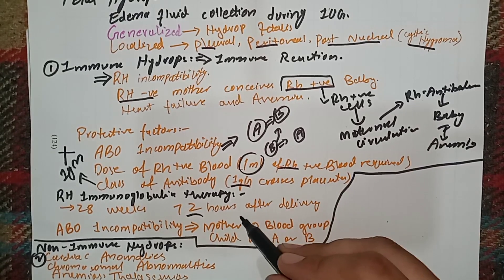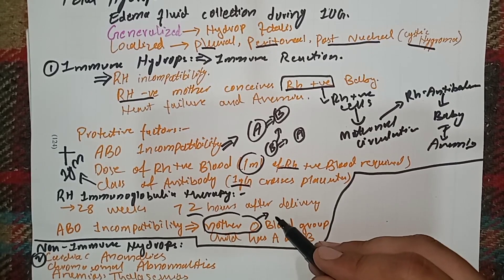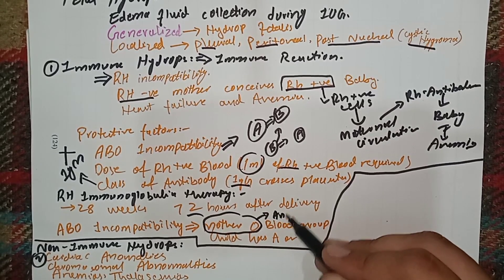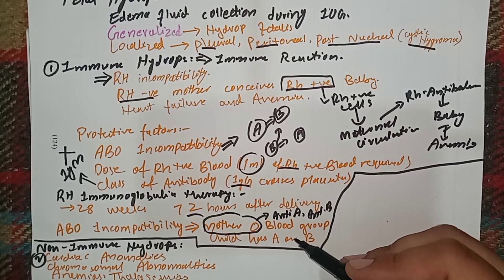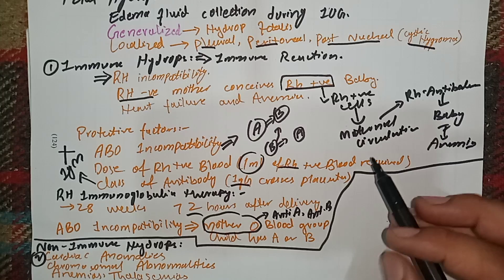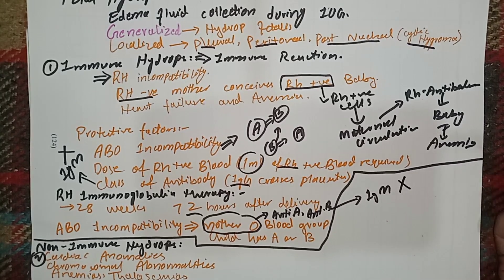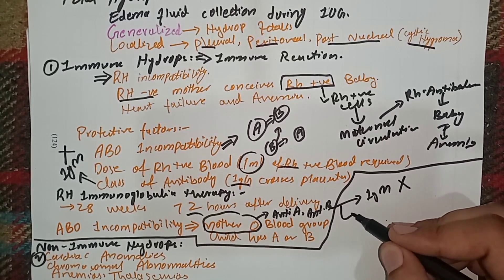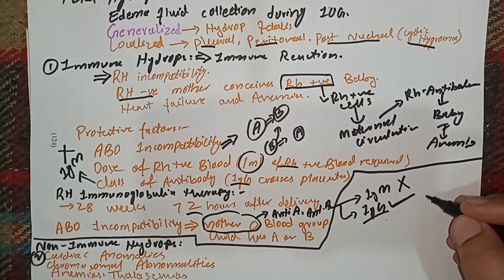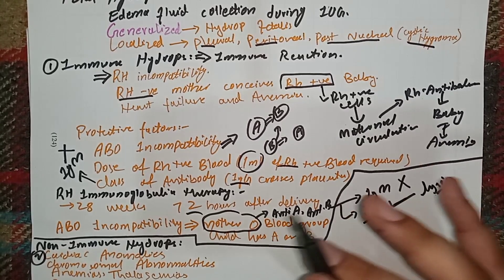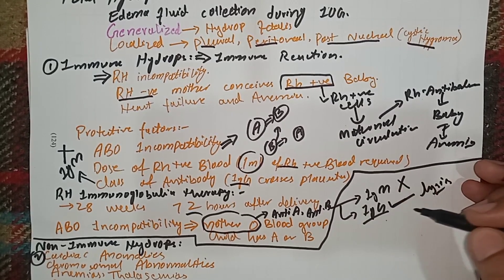ABO incompatibility can sometimes also cause fetal hydrops. This commonly arises when a mother has blood group O and the baby has blood group A or B. A blood group O mother will have anti-A and anti-B antibodies. Usually these are IgM and don't cross the placenta, but in some cases these anti-A and anti-B antibodies can be IgG. If they are IgG, they cross the placenta, destroy the baby's red blood cells, and fetal hydrops can result. There is no effective prevention for ABO incompatibility-related hydrops.